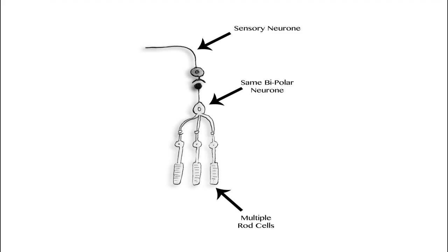For example, two closely positioned single points may appear as a single one, as multiple rod cells can only send information via one neuron.